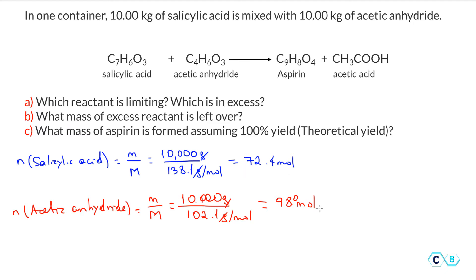So we have 98 moles of acetic anhydride and 72.4 moles of salicylic acid. We need to address the first question, which is about the limiting reactant. Because the ratio is one-to-one here, the one that is present in lesser quantity — salicylic acid — will be the limiting reactant.